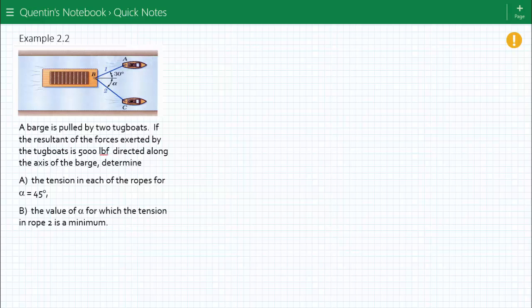what does that mean? We have the force here in this direction and it's 5,000 pounds. So the tension of the ropes for alpha is equal to 45 degrees. So how do we do this? Let's look at this. Let's start with B.